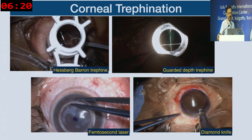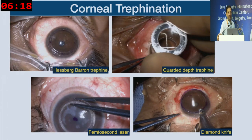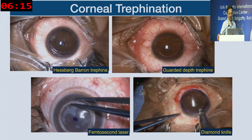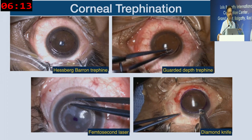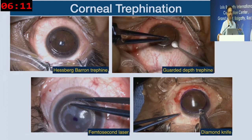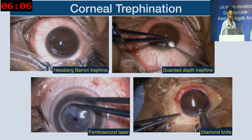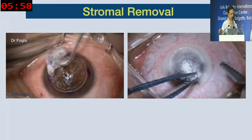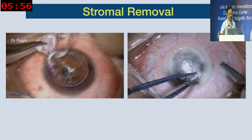For either technique, a partial-thickness trephination is essential. We commonly use the Hesburgh pattern suction trephine where a quarter-turn cuts to a depth of 60 microns. You have guarded-depth trephines of 300, 350, or 400 micron blades for manual trephination. You can also do this with a femtosecond laser, or in certain cases use a preset diamond knife set to the desired depth.